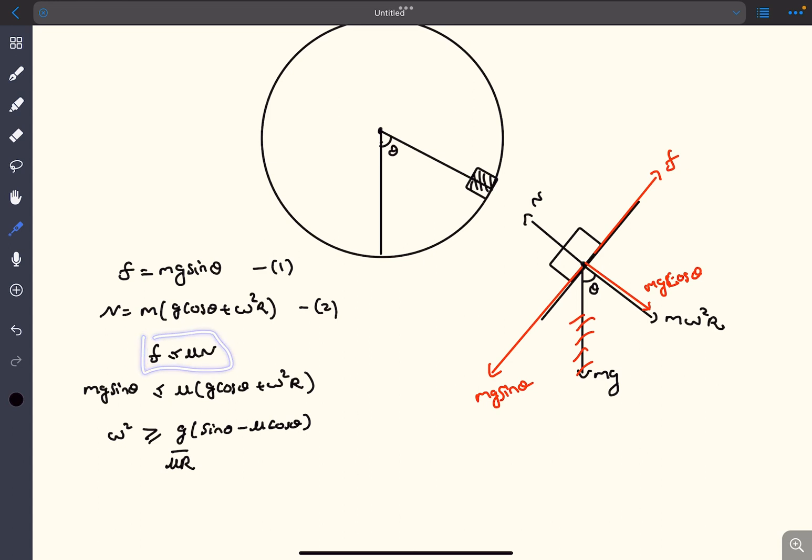After solving this inequality you will get a condition for omega. What this condition actually says is that at any general theta, omega has to be greater than this particular value so as to ensure that the block does not slip. If we take random points on the circular path then at those random points the omega limiting would be different.